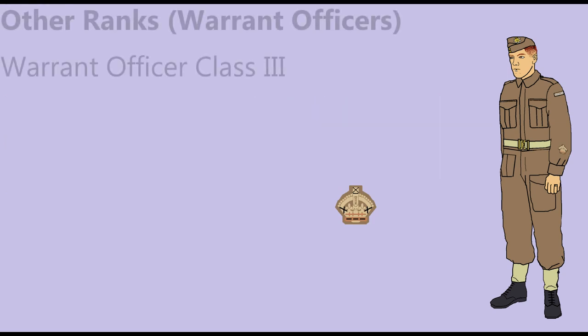In 1939, the rank of Warrant Officer Class III was created. The insignia was a bare crown worn on the lower sleeves. The rank was trialed as a replacement for junior officers in the first year of the war, but the Army decided it wanted infantry platoons, artillery, and tank troops commanded by officers. Most of the Warrant Officers Class III were commissioned as lieutenants beginning in 1940.